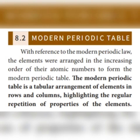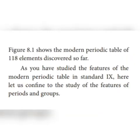The modern periodic table is an arrangement of elements in rows and columns highlighting the regular repetition of properties of the elements. So far it shows that the modern periodic table contains 118 elements. How many elements are present in the modern periodic table, students? It contains 118 elements.